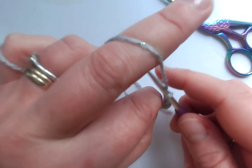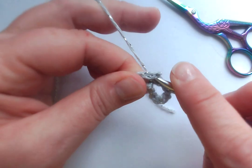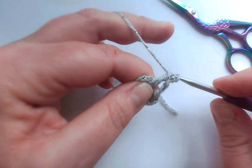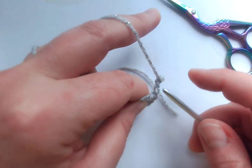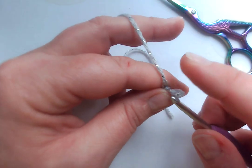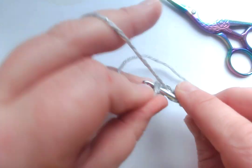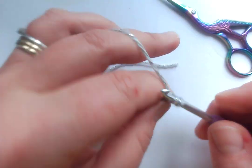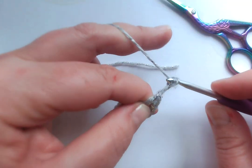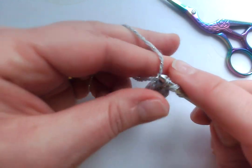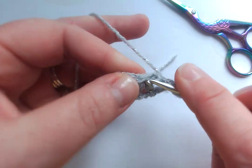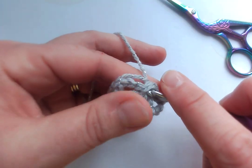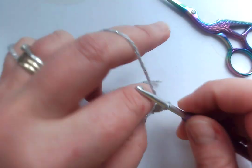So then you do chain two and another treble, chain two and another treble, and repeat that until you have six, I call them spokes. So you've got a treble and a chain two. Treble, chain two.